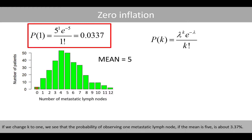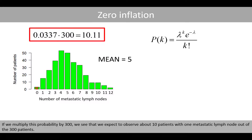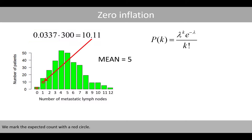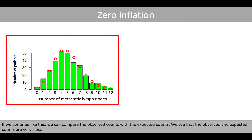If we now change k to 1, we see that the probability of observing one metastatic lymph node if the mean is 5 is about 3.37%. If we multiply this probability by 300, we see that we expect to observe about 10 patients with one metastatic lymph node out of the 300 patients. We mark the expected count with a red circle. If we continue like this, we can compare the observed counts with the expected counts, and we see that the observed and expected counts are very close.